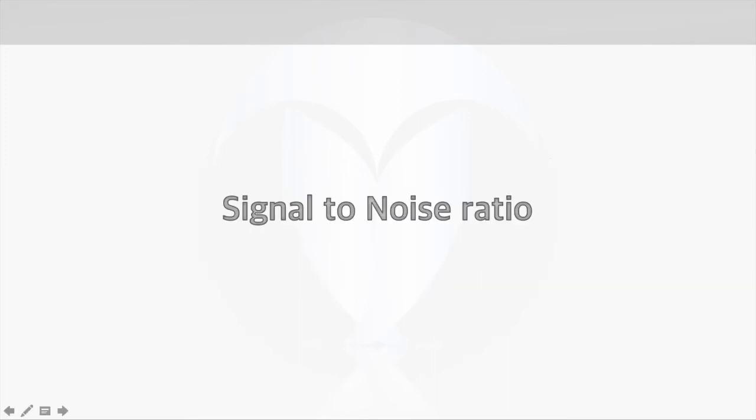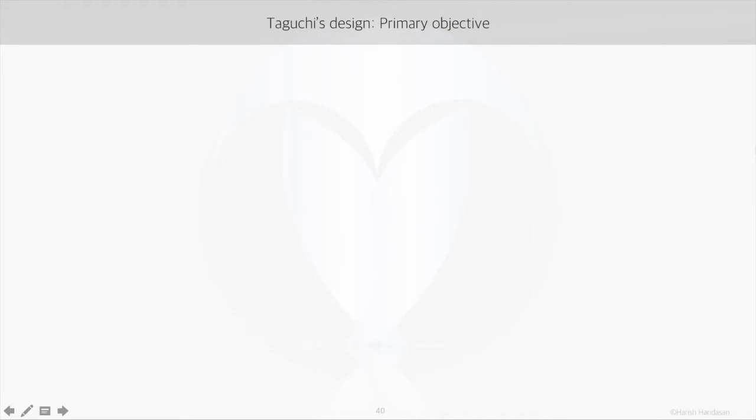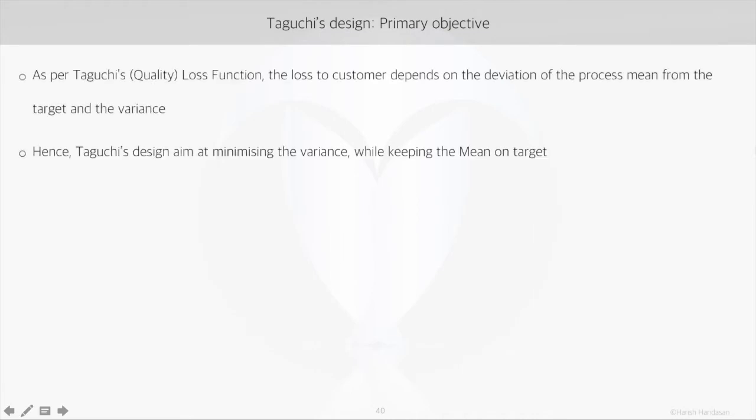Let's understand what is signal to noise ratio. In the first part of this video series, we learned about Taguchi's quality loss function, which states that as the process mean deviates from the target, there is loss to the customer. This loss increases if there is high variance in the process.